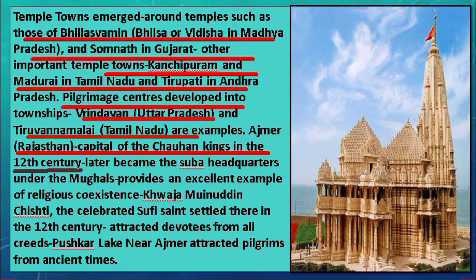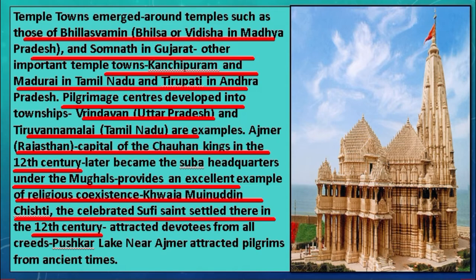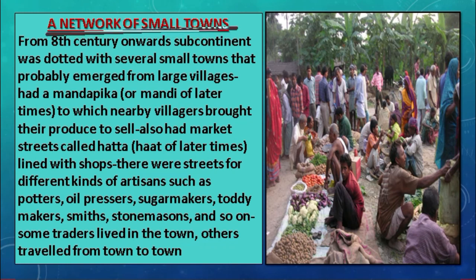Ajmer grew as a pilgrimage center during the 12th century when it was the capital of the Chahamana kings. Later, Ajmer became the subah headquarters under the Mughals. The Mughals did not harm the religious sentiments of others and provided an excellent example of religious co-existence. The Sufi saint Khwaja Moinuddin Chishti settled in Ajmer in the 12th century, attracting Muslim devotees from all over the subcontinent.